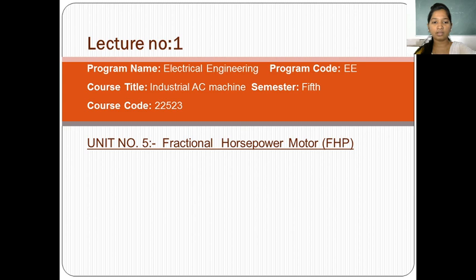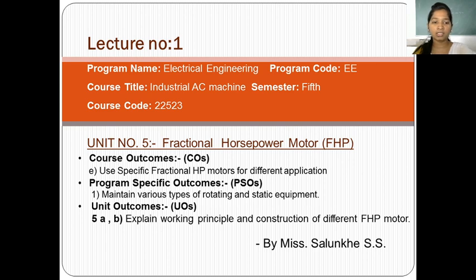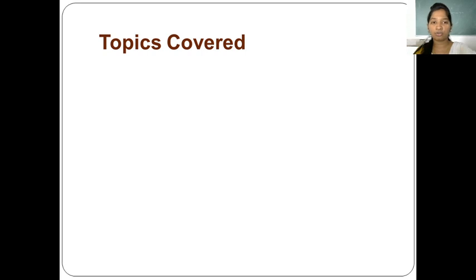We are going to cover our course outcome for unit number 5, which is to use specific Fractional Horsepower Motors for different applications. The program specific output related to this unit is to maintain various types of rotating and static equipment. First, we will cover the unit outcome: explain the working principle and construction of different Fractional Horsepower Motors. Today's topics include an introduction to Fractional Horsepower Motors.